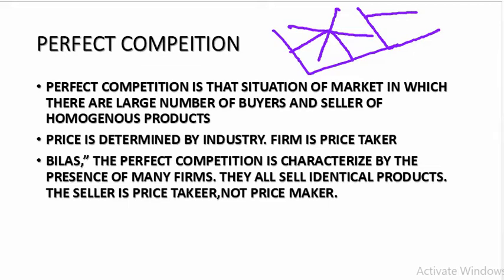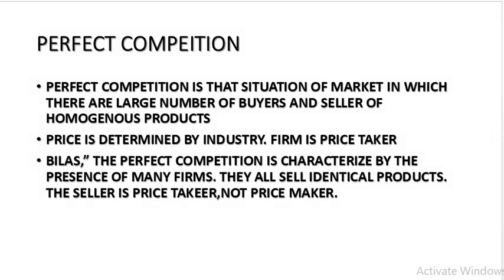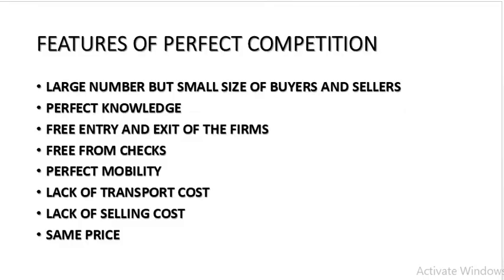The seller is price taker, not the price maker, because the price is fixed by the industry on the basis of demand and supply. Features of perfect competition: large number but small size of buyers and sellers, buyers and sellers have perfect knowledge, freedom to enter and exit — any firm could enter, any firm could exit, no restriction. Factors of production are perfectly mobile. No transaction cost, no transport cost, no selling cost. The price is always the same. If perfect knowledge and perfect mobility are removed, it is called pure competition.